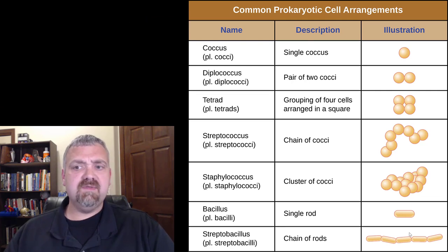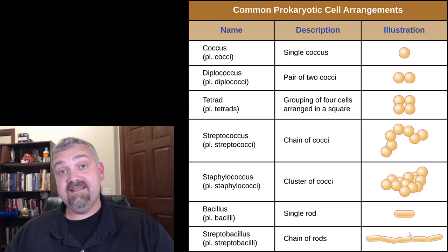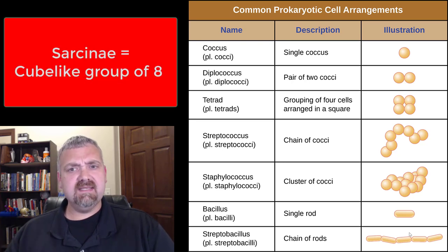Tetrad, we don't talk about that much. That'd be a group of four. If you want to go even further into a group of eight, that's called a sarcina, but that's not a big deal.